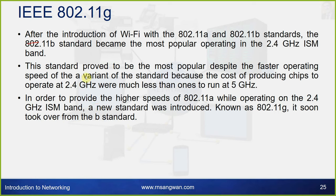The 802.11B standard became the most popular, operating in the 2.4 GHz ISM band, largely because producing chips for 2.4 GHz was much less expensive than for 5 GHz. To provide the higher speeds of 802.11A while operating on the 2.4 GHz band, a new standard — 802.11G — was introduced. It soon took over from 802.11B, and is the standard currently used for hotspots and mobile hotspots.